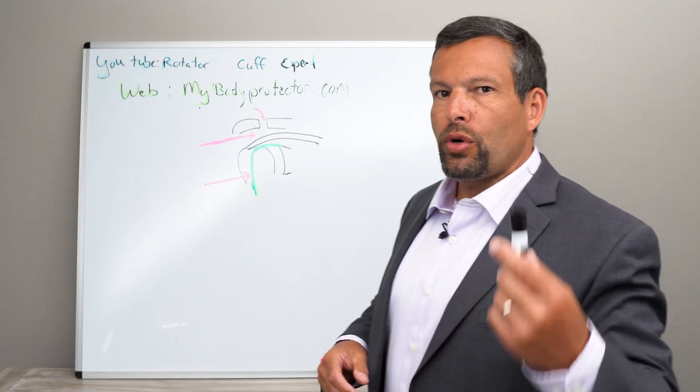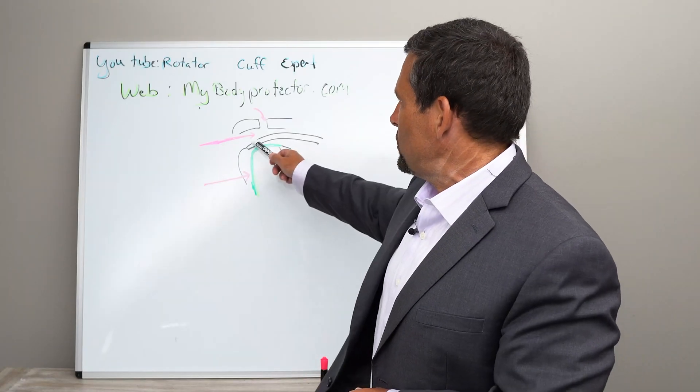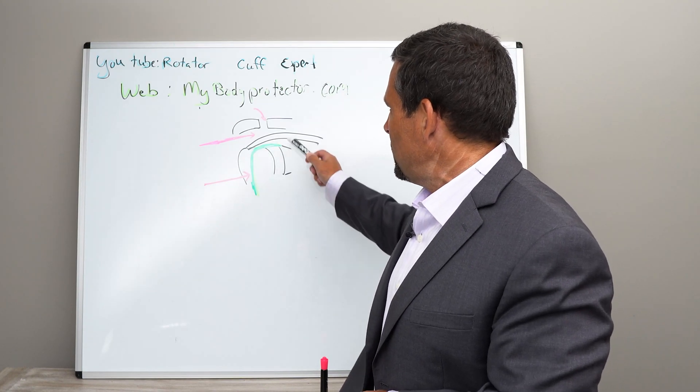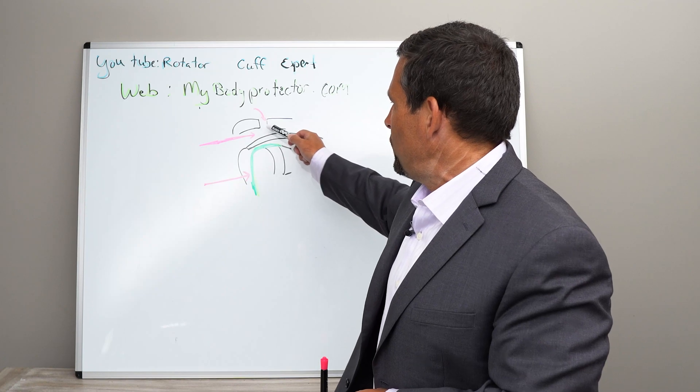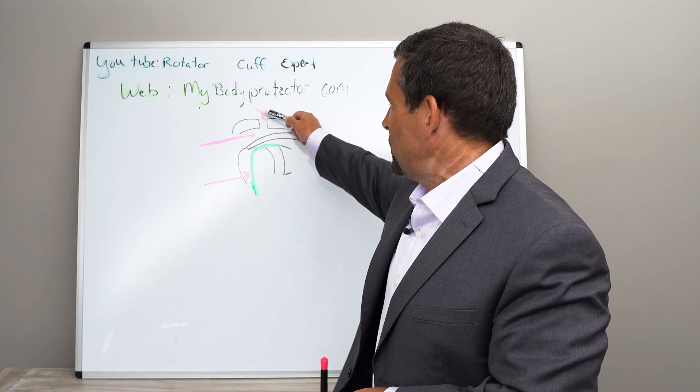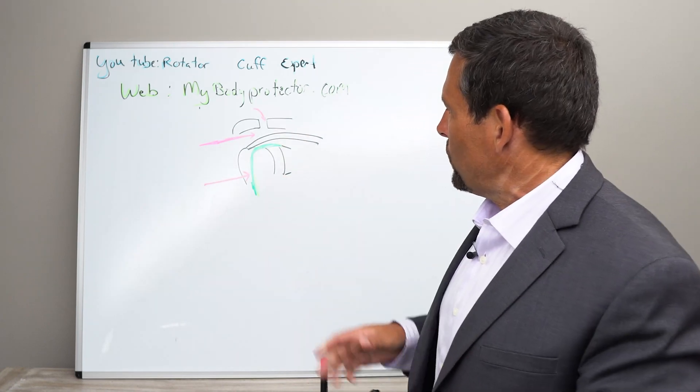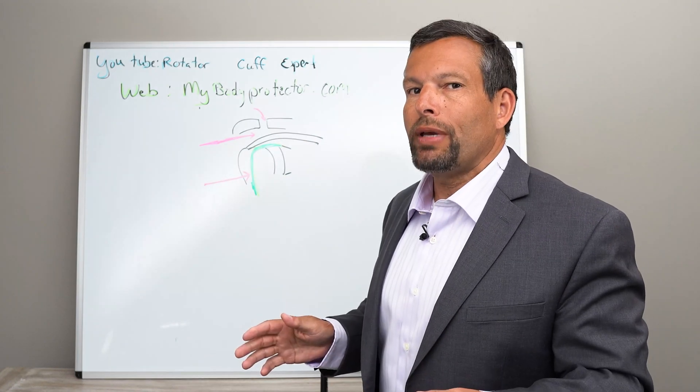So when we have a rotator cuff irritation, so this is the rotator cuff, this is the ball, this is the socket, this is the biceps tendon, and this is the joint above the rotator cuff called the AC joint. And so the red arrows are where we're talking about the most common places we may inject.